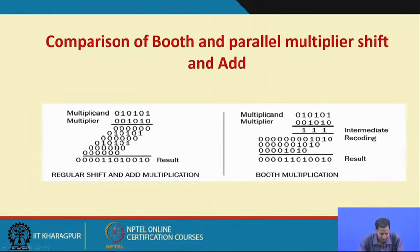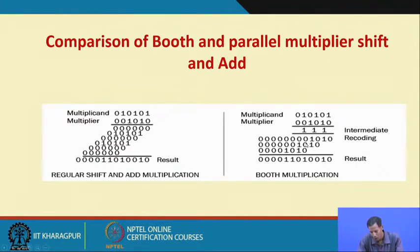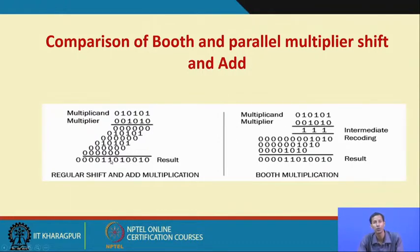To add 6 partial products in general requires 5 full adders in a chain. But to add the partial products generated by Booth's algorithm, using only 2 adders I can get the same result. So I can reduce the number of adders greatly, and the performance of this multiplier will be much better than the general shift-and-add multiplication method. That is why we follow Booth's multiplier.